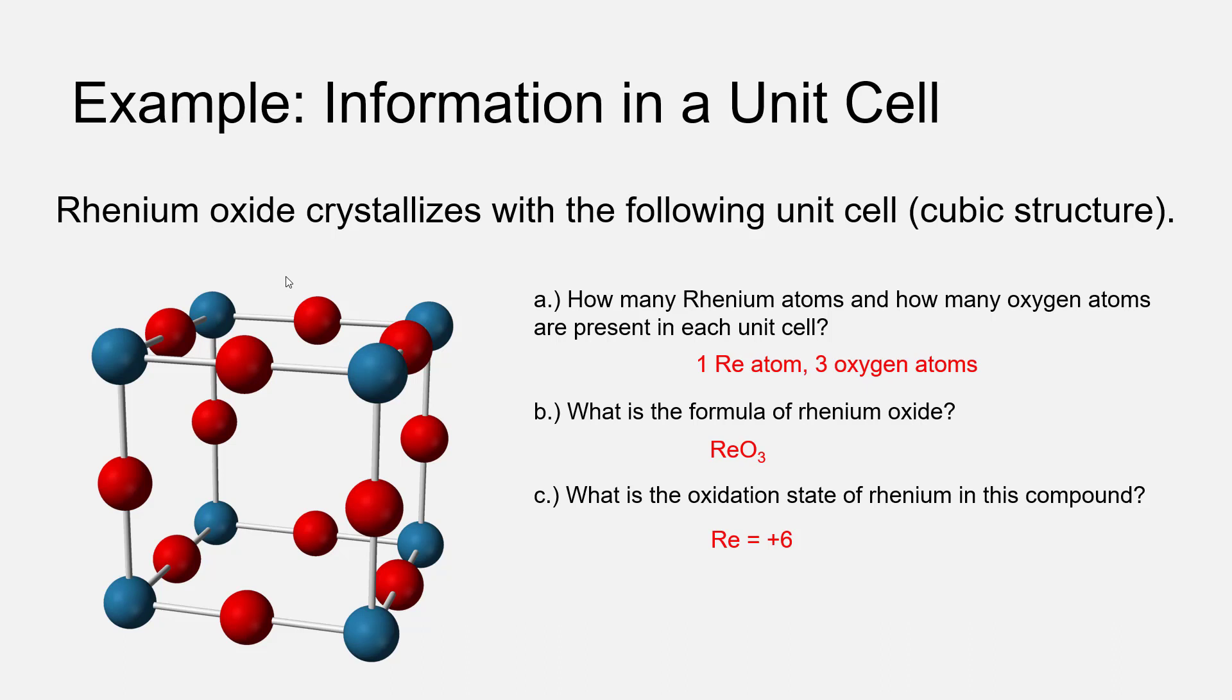In general, ionic compounds have more complex unit cells than metal crystals will. However, we can use the same type of considerations from X-ray crystallography and X-ray diffraction to figure out the number of atoms per unit cell, the chemical formula, and the density of the material, because it follows the same basic rules.